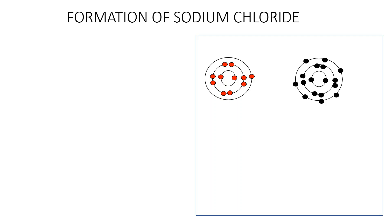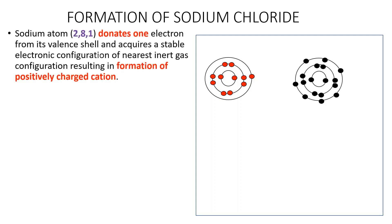Sodium chloride is made up of one atom of sodium and one atom of chlorine. The sodium atom has got one electron in its valence shell. Sodium tends to lose this electron and attains the stable noble gas configuration of the nearest zero group, i.e. neon.